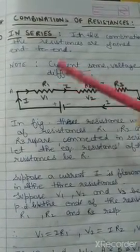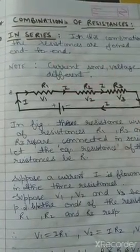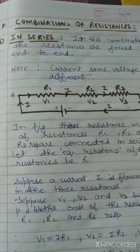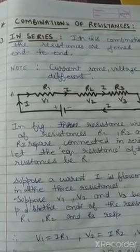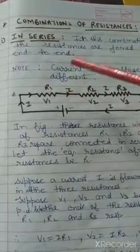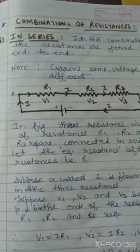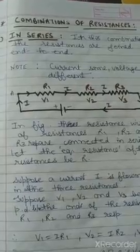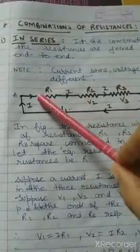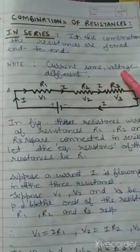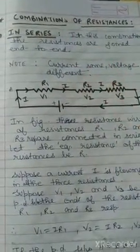First we will discuss about the series combination. In series combination, the resistances are joined end to end. In this case, current will be same and voltage will be different.